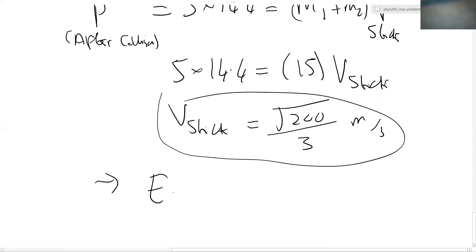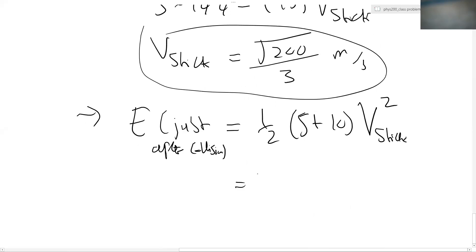So now the energy, just after collision, is equal to a half times total mass, five plus 10, times by V stick squared. Well, that's the velocity just above, which essentially means it's going to be a half into 15 into 200 over 9, if you square that V stick. And this comes out at about 167 joules. So this is the energy just after the collision.